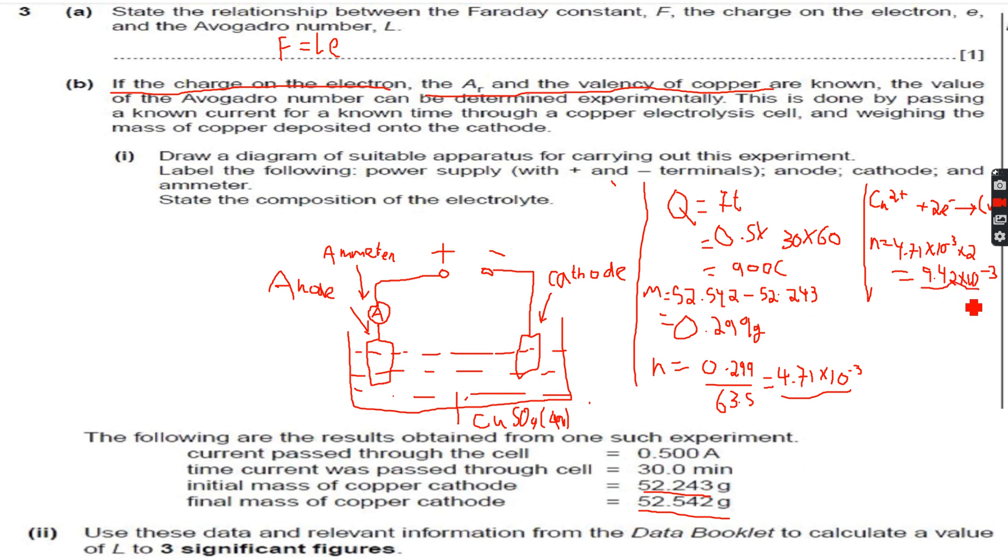Now we can calculate the Faraday constant because we know that Q over F will be equal to n. We already have n, we already have Q, so F will be equal to Q over n, which will be equal to 900 divided by 9.42 into 10 to the power of minus 3.